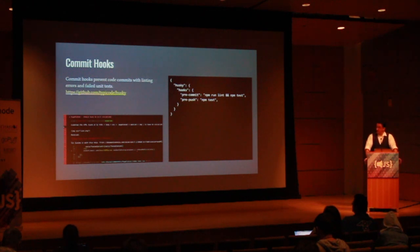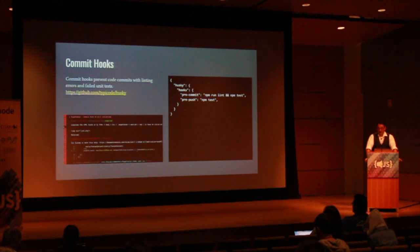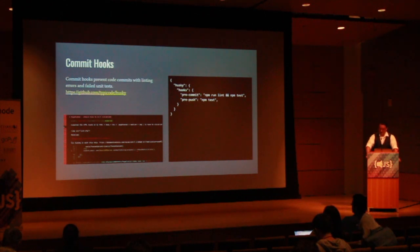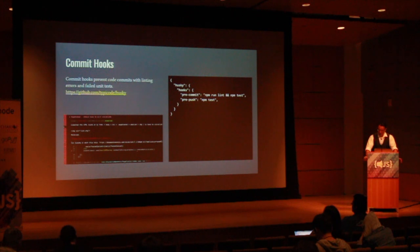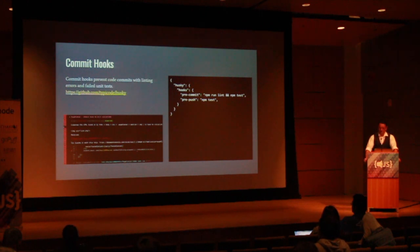So here's where it all comes together. You can prevent the code from being pushed up to your remote if it fails any of your linting rules or unit tests. The code on the right is saying: before the code is committed, check to see if it passes your linting and unit tests — otherwise block it. It also says before the code is pushed up to the Git repo, run the unit tests. If you include accessibility testing in your linting and unit tests, then you can block the commits from being pushed.